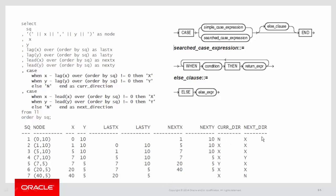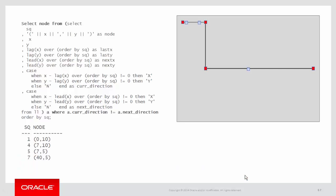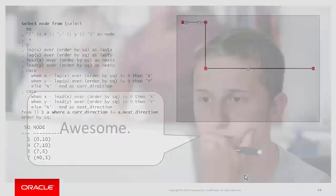That gives us the current direction and the next direction. Looking at the sketch again, the nodes highlighted in red — nodes 1, 4, 5, and 7 — are exactly the nodes where the current direction is different from the next direction. So all we have to do is wrap this in an outer statement that says WHERE the current direction is not equal to the next direction. And we have the list of nodes we wanted to keep. Problem solved.